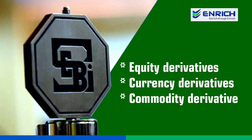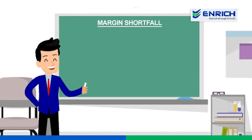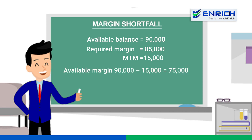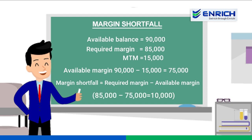Let me simplify it with the help of an example. Let's say you decide to trade in futures and options and the available balance in your account is $90,000. The required margin to trade is $85,000. Now imagine by the end of the day you incurred a loss of $15,000, so your MTM is $15,000. Your available margin now is $90,000 minus $15,000, which is $75,000. The required margin is $85,000. So the margin shortfall is $85,000 minus $75,000, which equals $10,000. In order to avoid margin shortfalls, a trader must have a surplus amount or add funds to maintain the required margin.